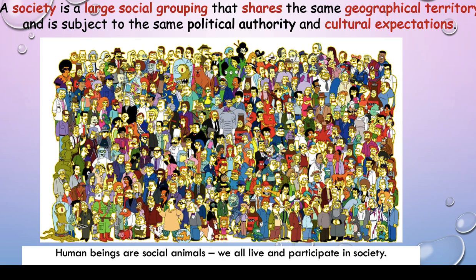A society is a large social grouping that shares the same geographical territory and is subject to the same political authority and cultural expectations. Human beings are social animals. We all live and participate in society — we don't just hunt and eat and do the same thing every day. We are social beings. That's why we have cinemas, that's why we learn to socialise and say please and thank you, and request things we need — or think we need when in fact we want them.